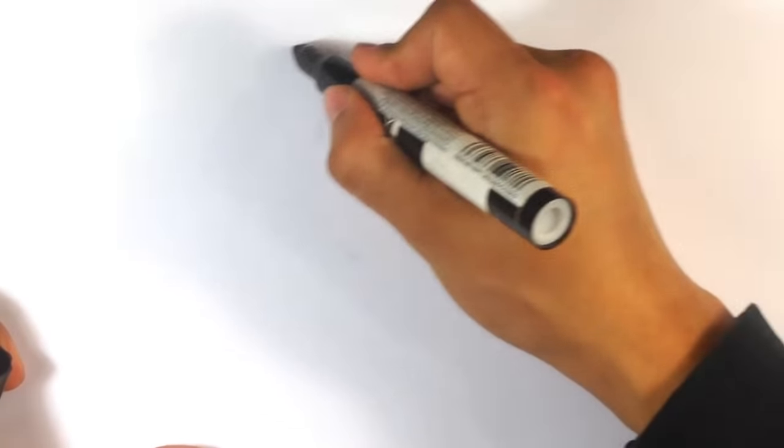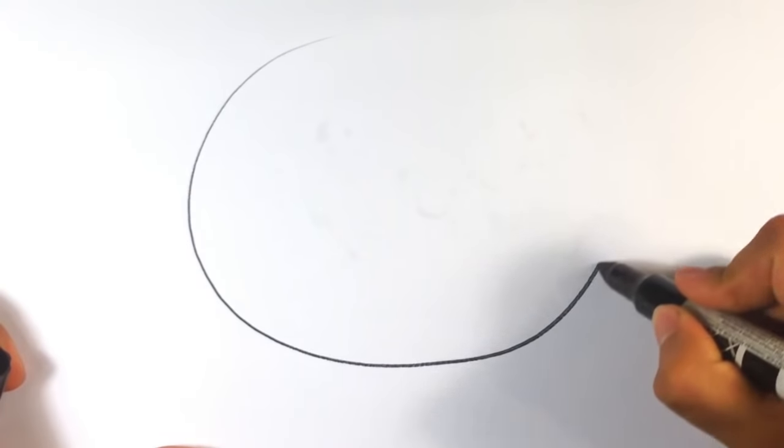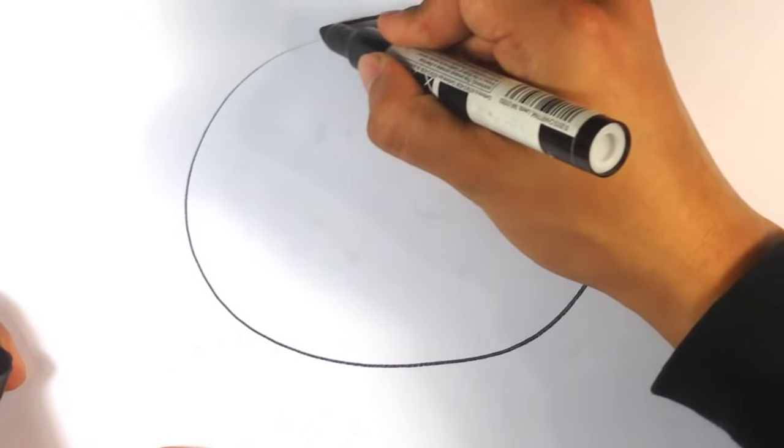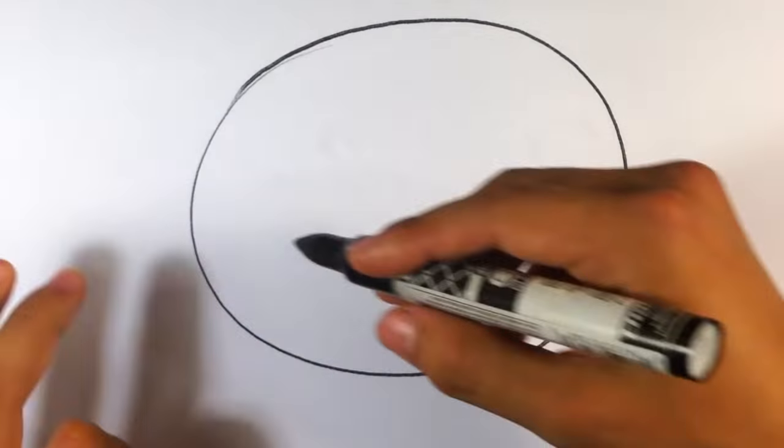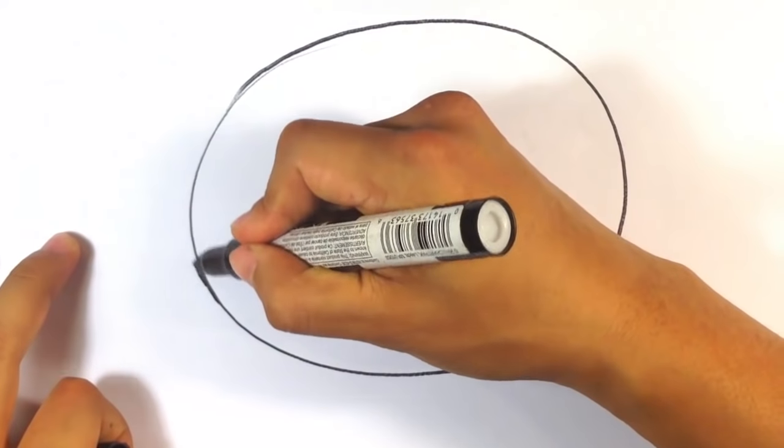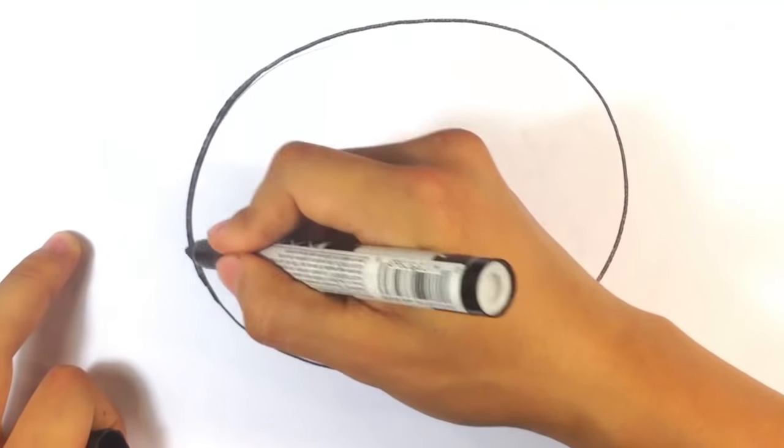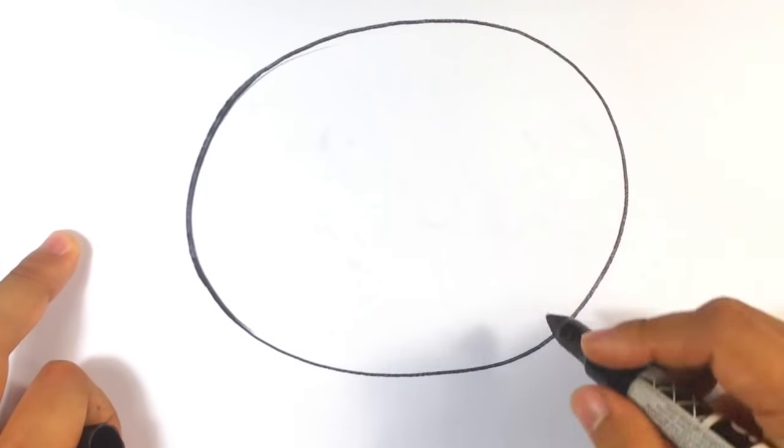I'm going to start with a circle. Some versions of him have kind of a pointed top of the head, but I'm going to choose just to do a normal circle for him, nothing too fancy.